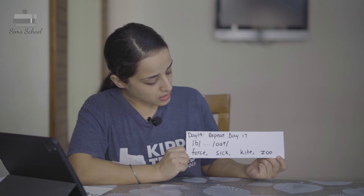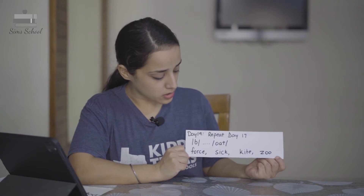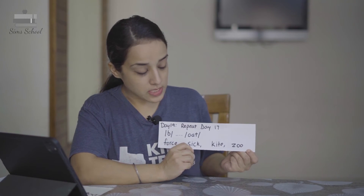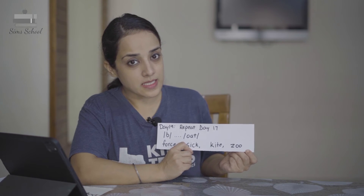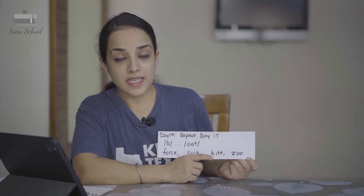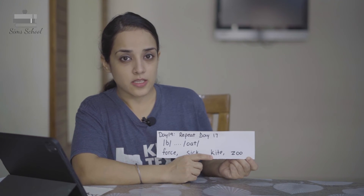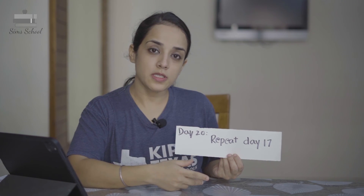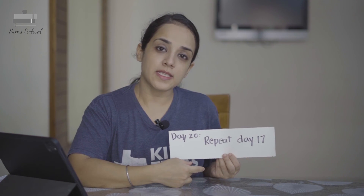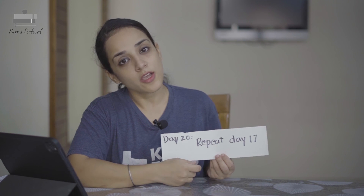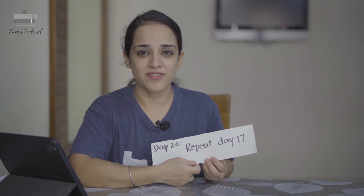For Day 19, you say 'f-orce', you say 's-ick', the child will say 'ick'. You will say 'k-ite', the child will say the rhyme. On Day 20, you will repeat Day 17 again — you will say words and the child will segment them into onset and rhyme. Thank you and see you in the next video.